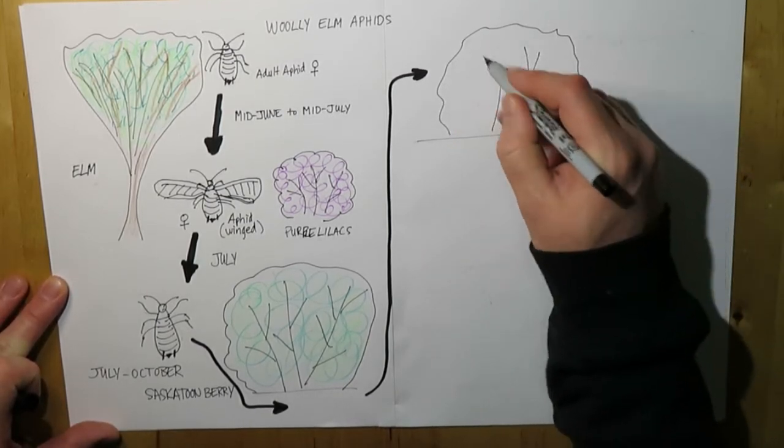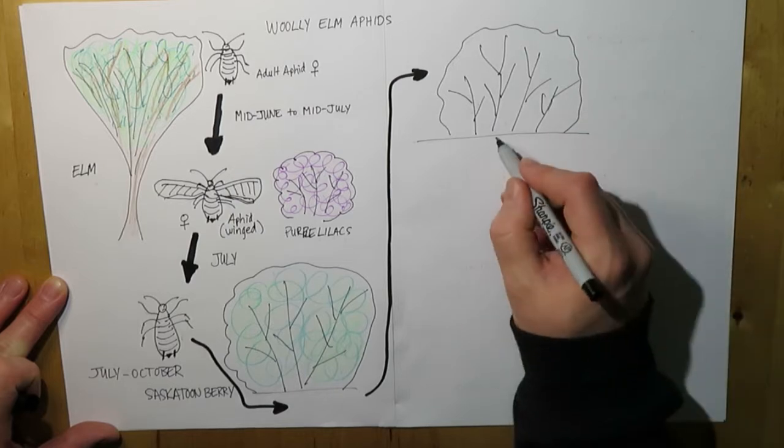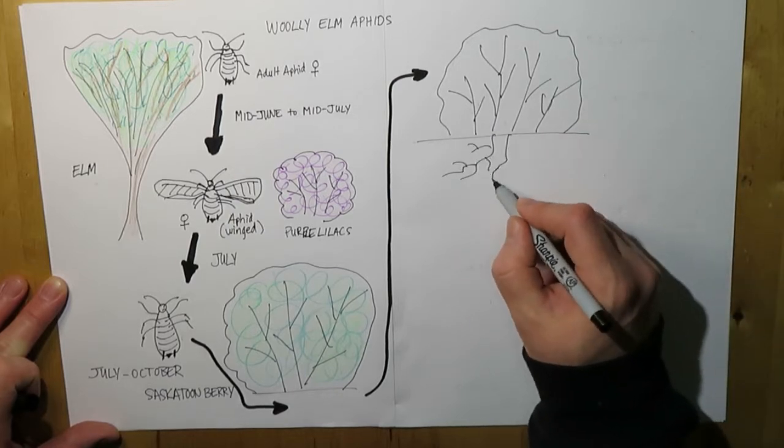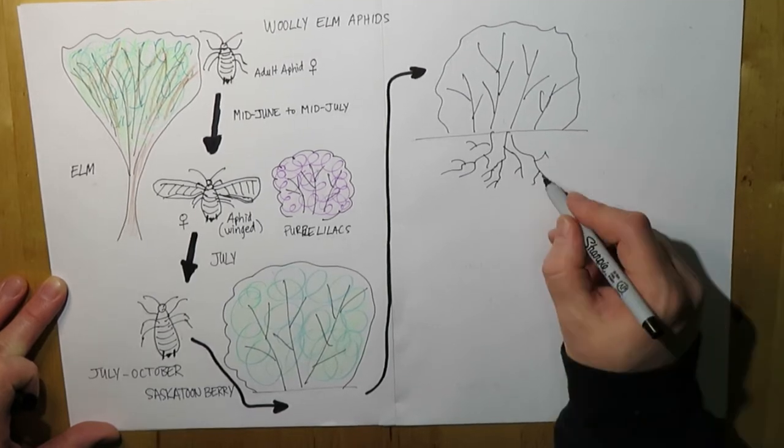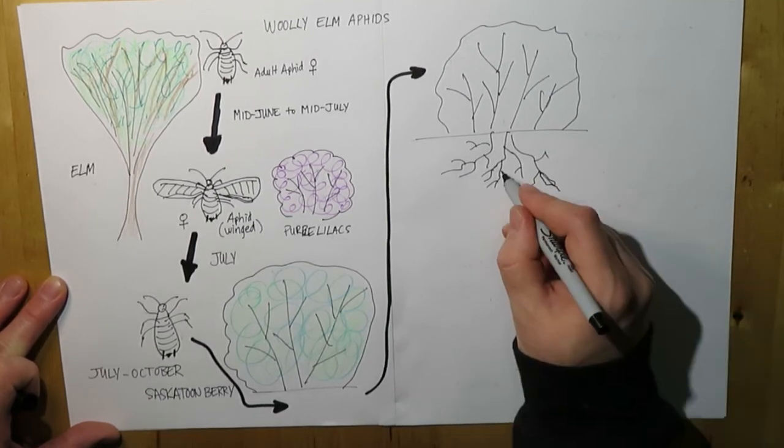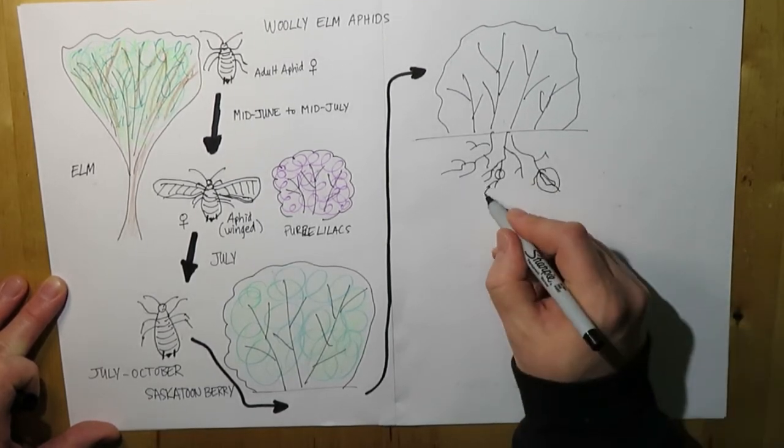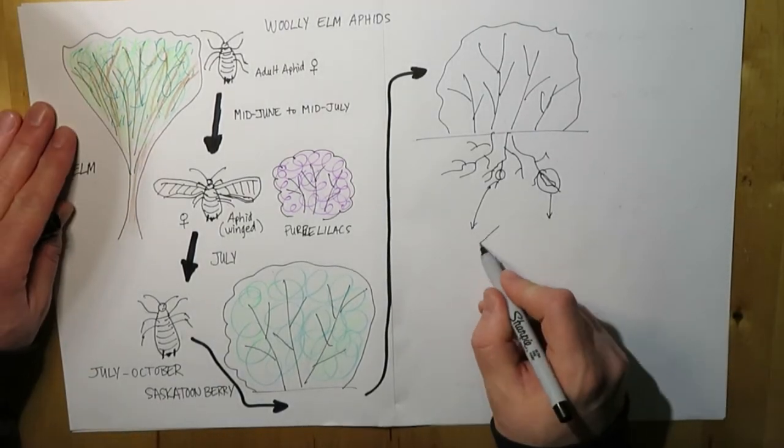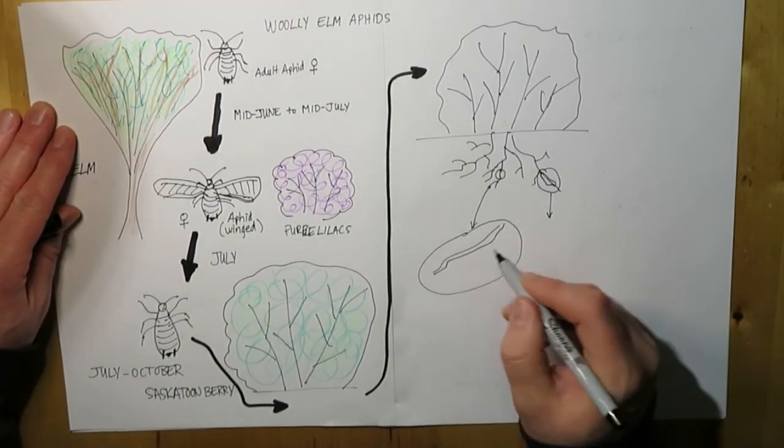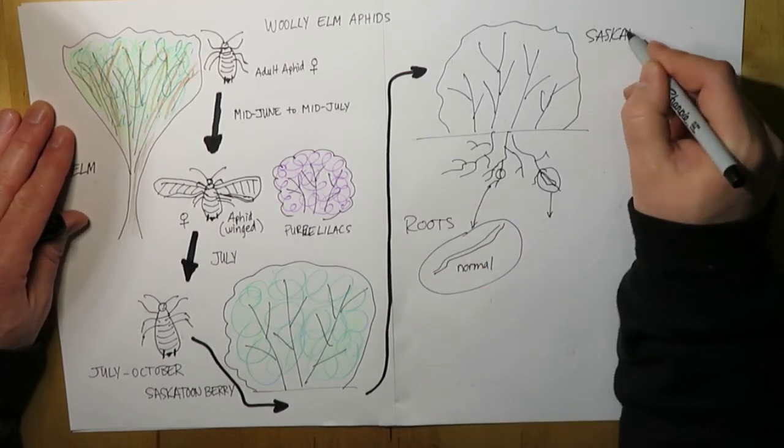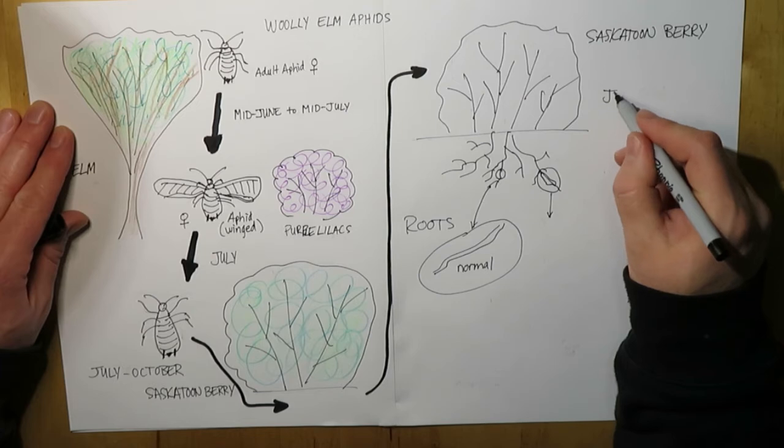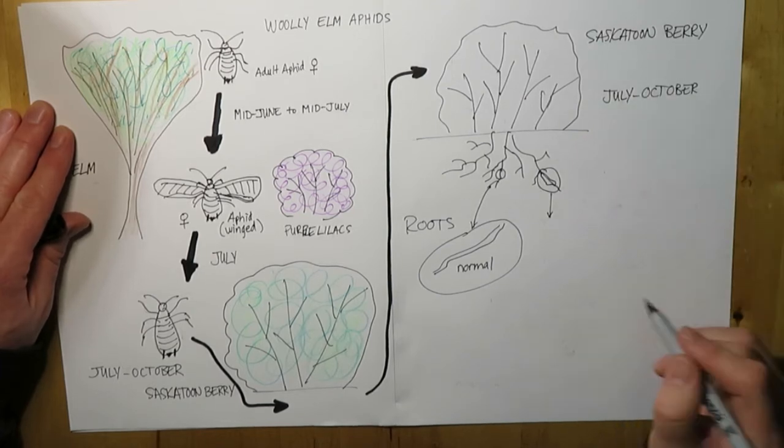So we're on the saskatoon. They're down on the roots. And when you look, a normal root should be white and creamy and fairly normal sized. And what will happen is the feeding by the aphids on the root cause the root to get all swollen and spongy, kind of orange. So a normal root will look pretty typical, but the swollen roots look big and quite deformed, and they definitely aren't functioning properly.